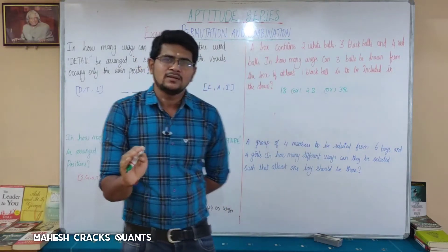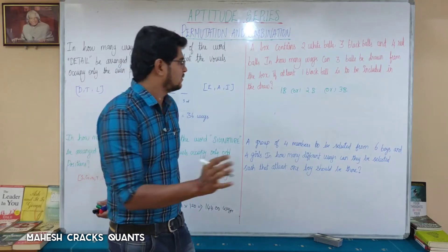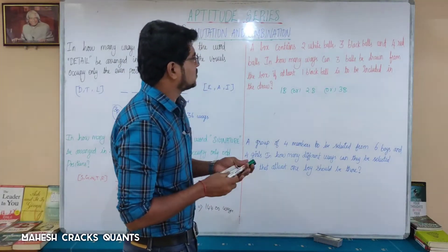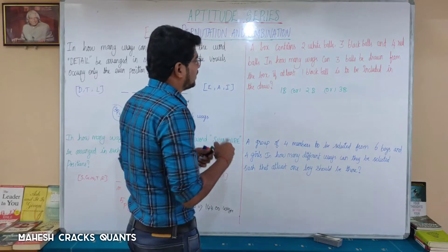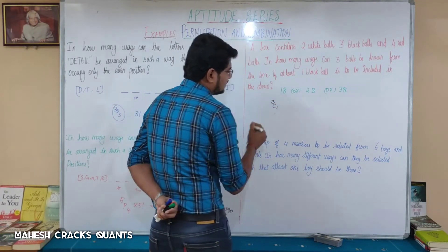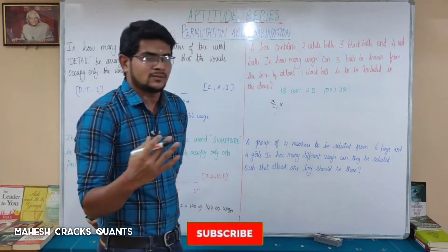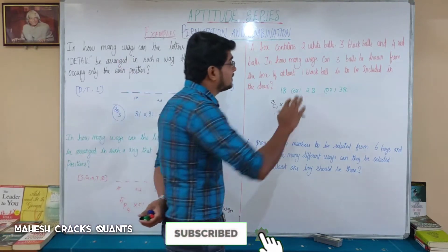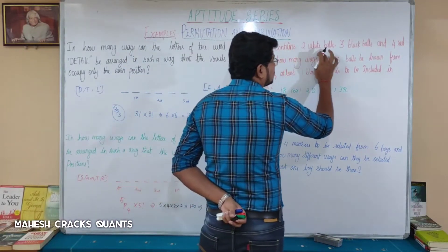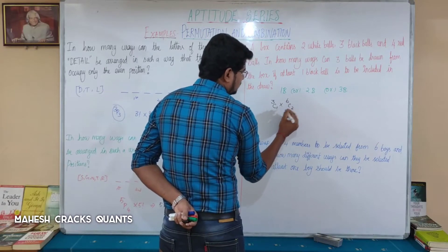Case 1: 1 black ball — choose 1 from 3 black balls and the remaining 2 from the other 6 balls (2 white + 4 red), giving 3C1 × 6C2. Case 2: 2 black balls — choose 2 from 3 black and 1 from the remaining 6 balls, giving 3C2 × 6C1.